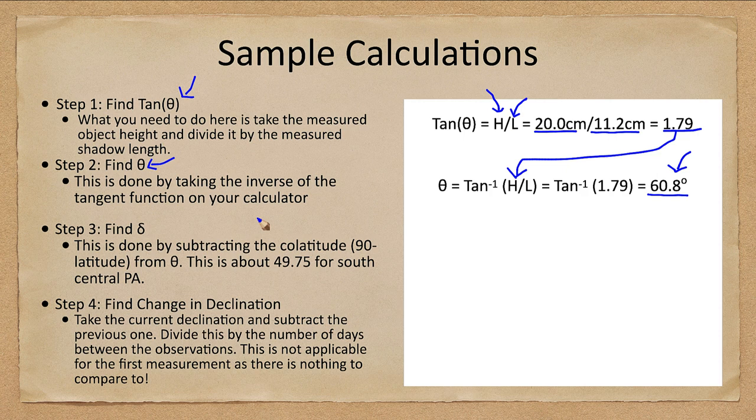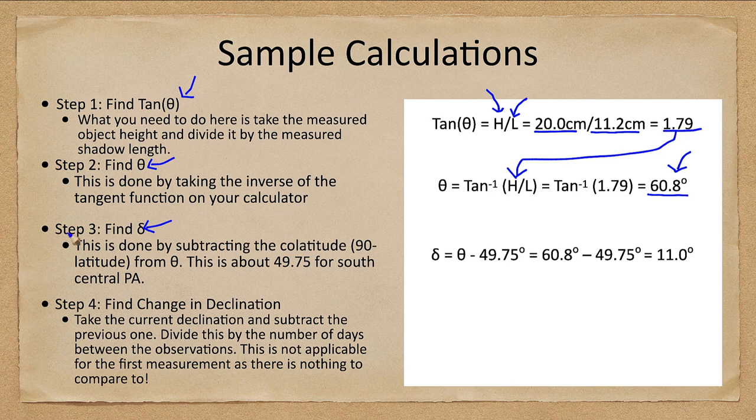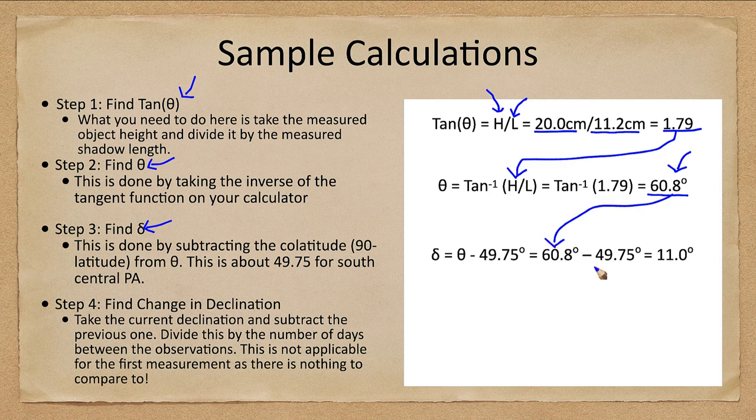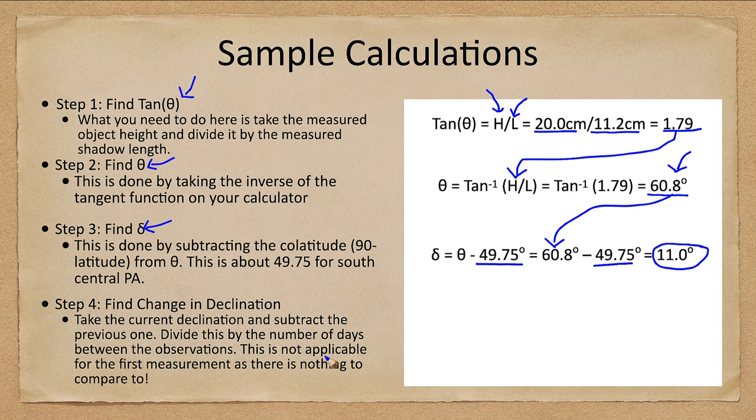Now our next step is to find the declination. We do that by subtracting from the number we just determined. We take that 60.8 degrees, subtract 49.75 degrees, and that gives us the declination of 11 degrees.